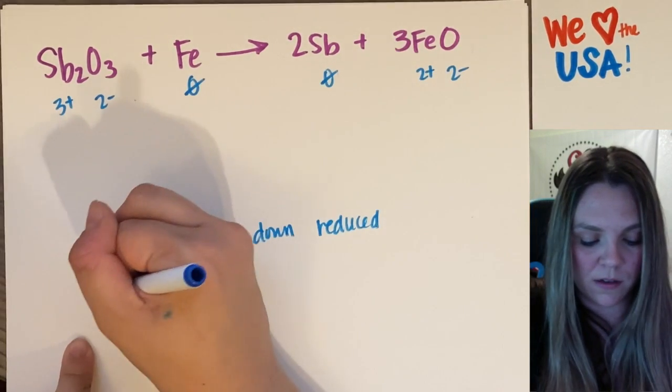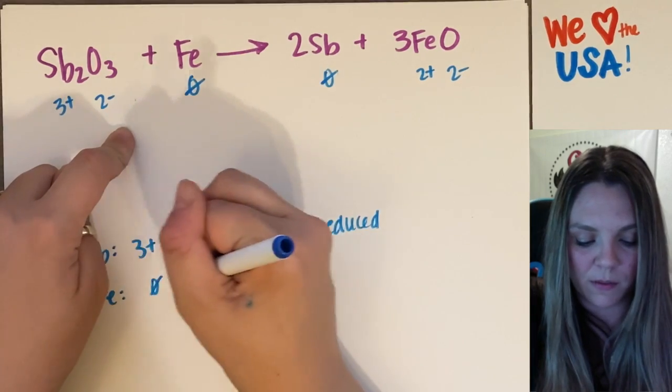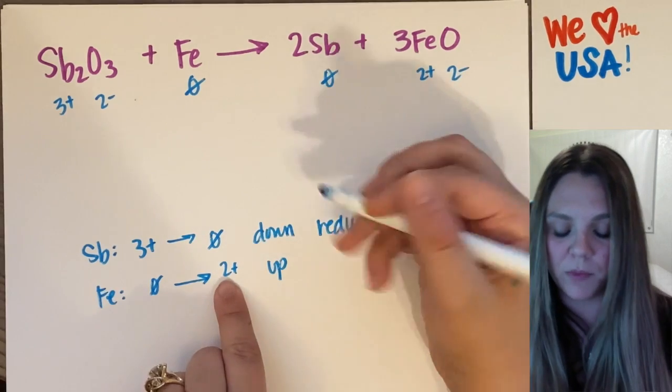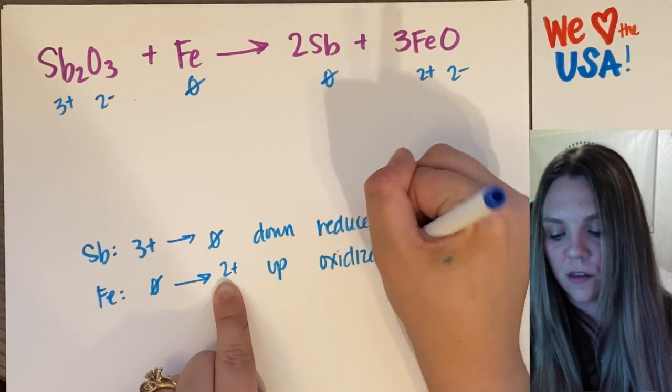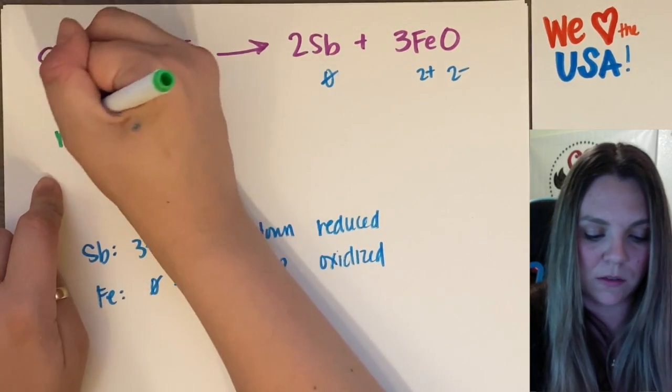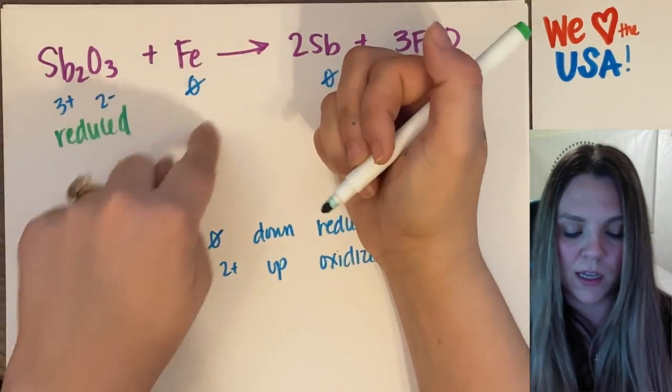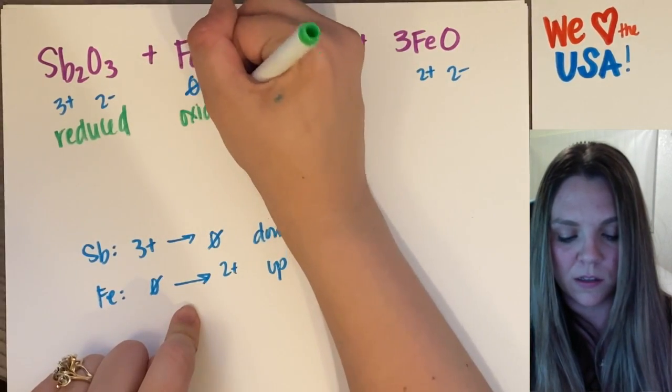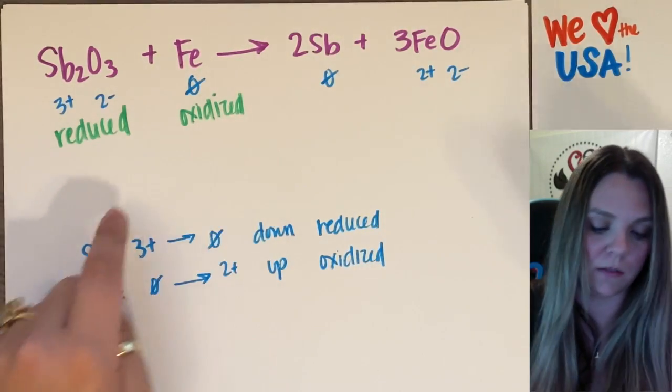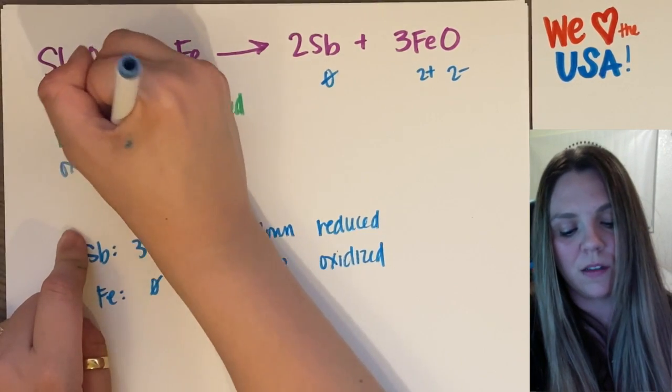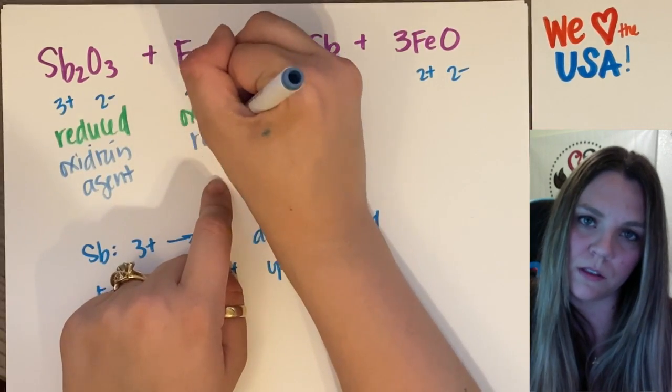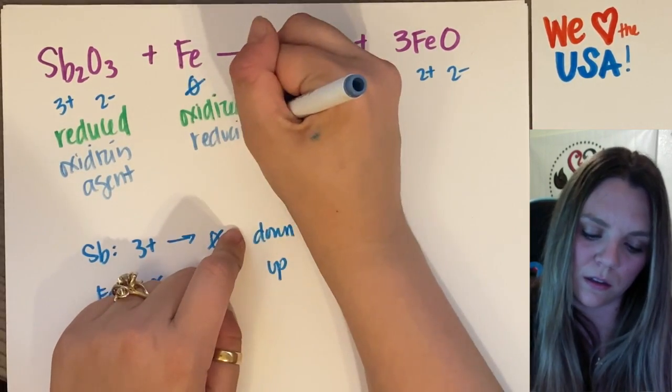For iron, I'm going from a zero to a two plus. It went up. Zero up to two plus. That means it gets oxidized. So this compound is reduced. This is oxidized. This guy's oxidized, which means because we do it backwards, it's reduced. So it's also the oxidizing agent. It's oxidized. So it's the reducing agent.